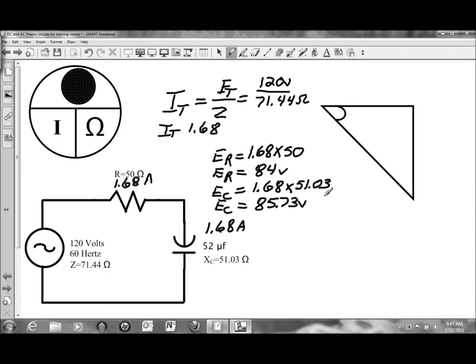And we can place those values on the triangle and verify that they match the source to double check our math. So on the adjacent side of the triangle, we have 84 volts that is dropped on the resistor, and we have 85.73 volts on the capacitor.